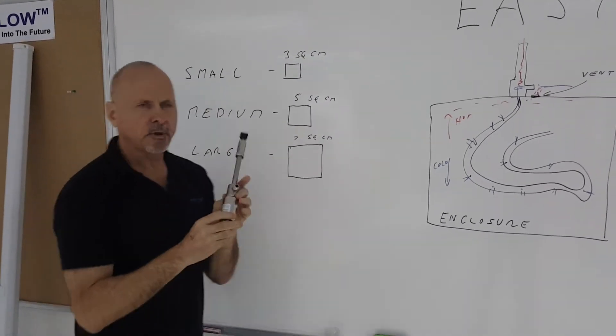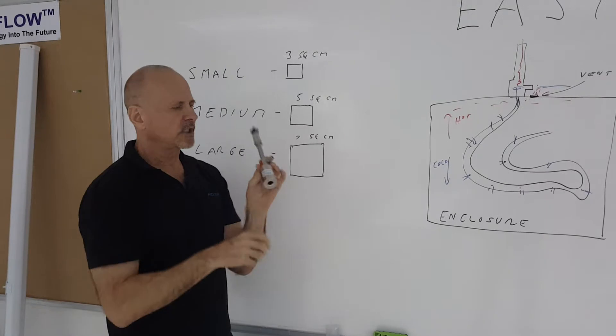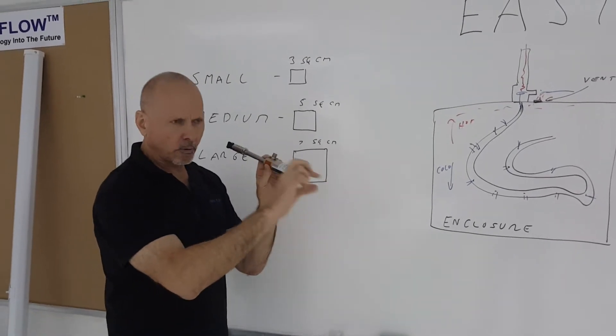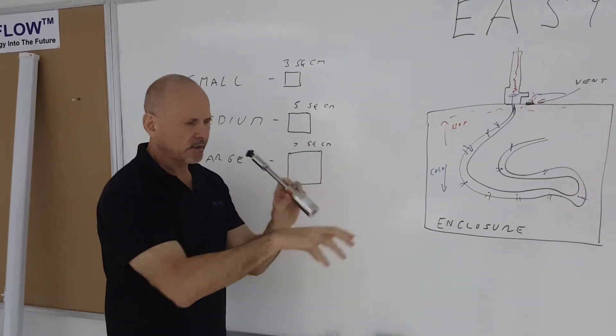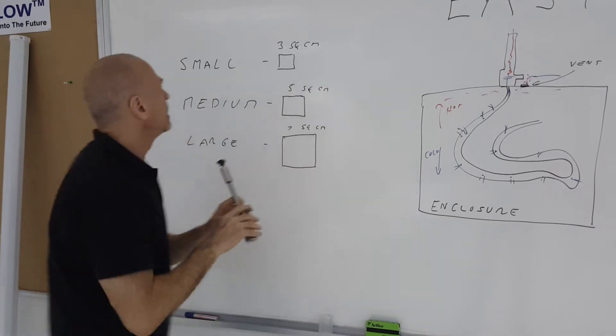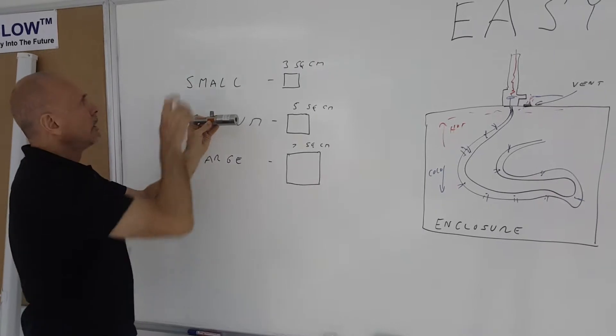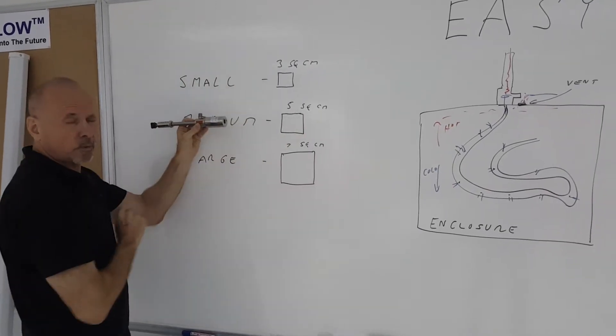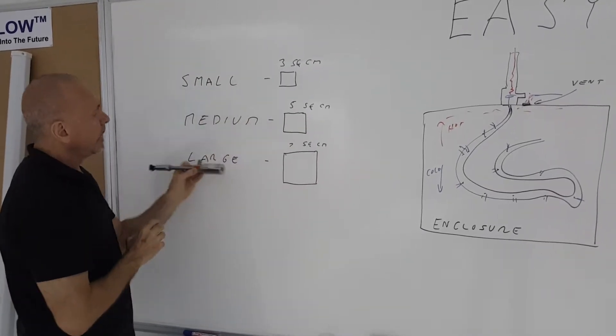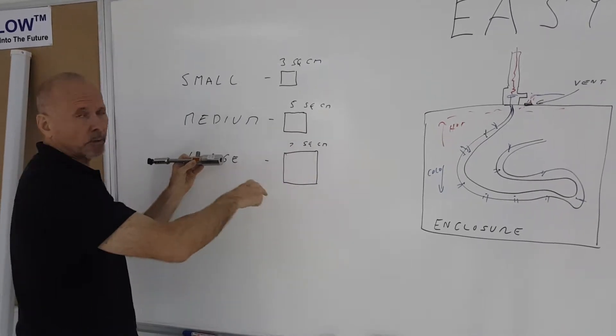If you're going to be utilizing a vortex tube in open air, which means like this or maybe with a hose on the end going onto a surface that's in an open area, a medium-sized vortex tube will cool about five square centimeters. The smaller sizes will cool about three square centimeters and the largest sizes about seven square centimeters.